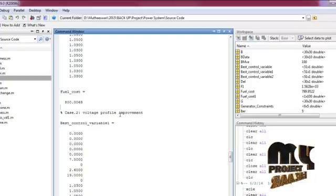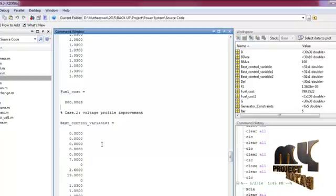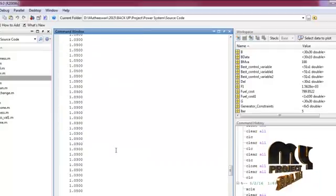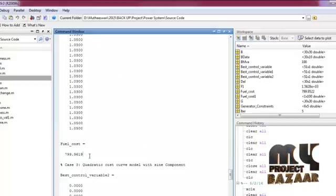Case two is voltage profile improvement. In this case, we obtained the best control variable using ABC algorithm and we got the fuel cost at final stage.